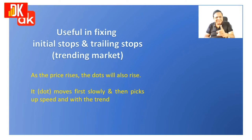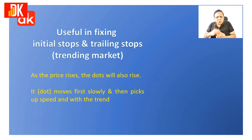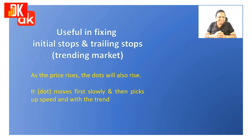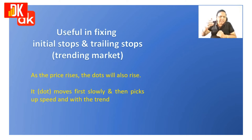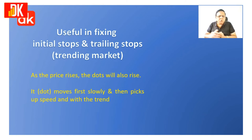Because it works only in the trending market, it will work in a markup phase and in a markdown phase. In a sideways or range-bound market, it gives very false signals and should not be relied upon. The dot will first move slowly, then it gains momentum and speed as the trend develops. It starts rising faster, so your stop loss becomes closer and closer — the trailing stops become closer and closer — which helps you not only to ride the trend but also to preserve the profit you have already made.